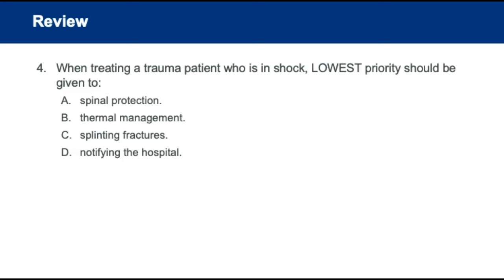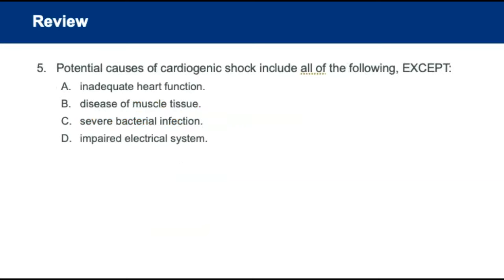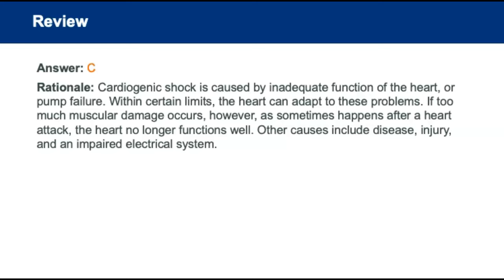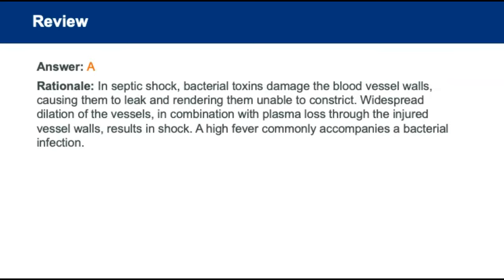When treating a trauma patient in shock, the lowest priority is splinting fractures — that is a secondary issue. Potential causes of cardiogenic shock include inadequate heart function, disease in the muscle tissue, and impaired electrical system; bacterial infection is a distributive issue, not cardiogenic. A 60-year-old woman presenting with a blood pressure of 80 over 60 — only a 20-point difference — a pulse rate of 110, mottled skin, and a temperature of 103: the temperature is the key indicator here, pointing to septic shock.